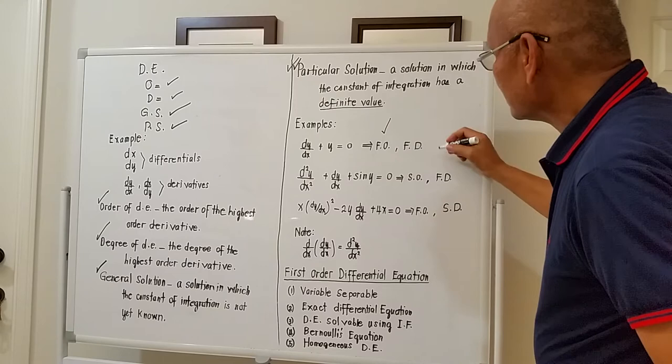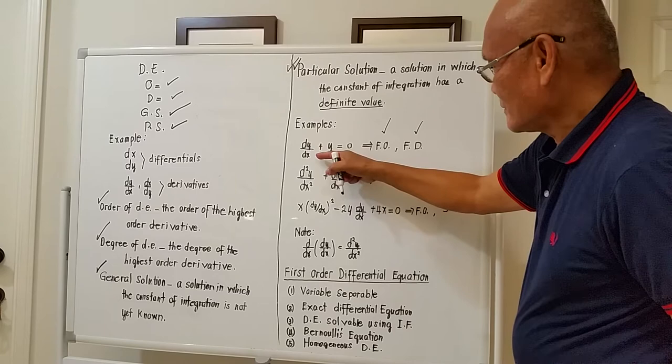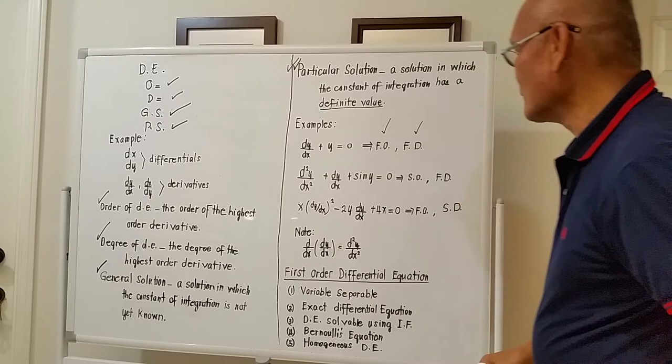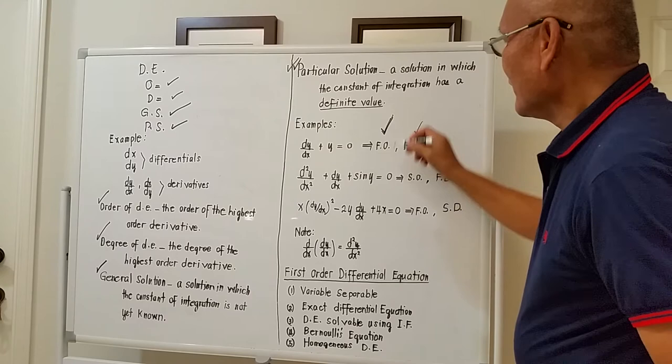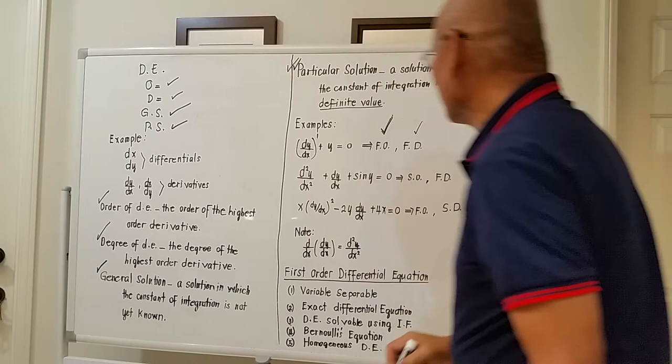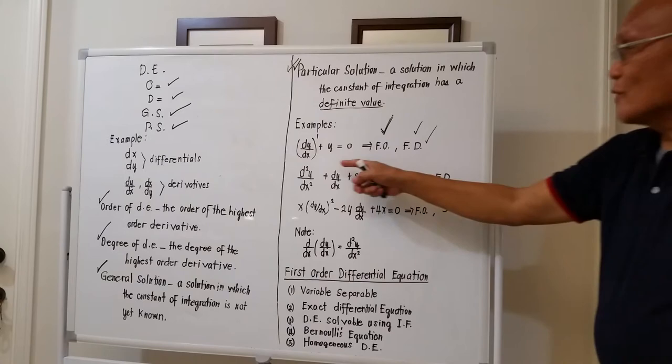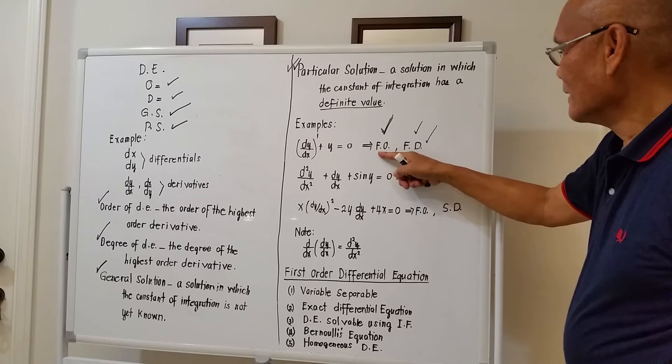How many times does dy/dx come out from the equation? It's only one time, so it's first order. And what is the power of dy/dx? It is to the first power, so this is first degree. The first equation, dy/dx + y = 0, is first order and first degree.